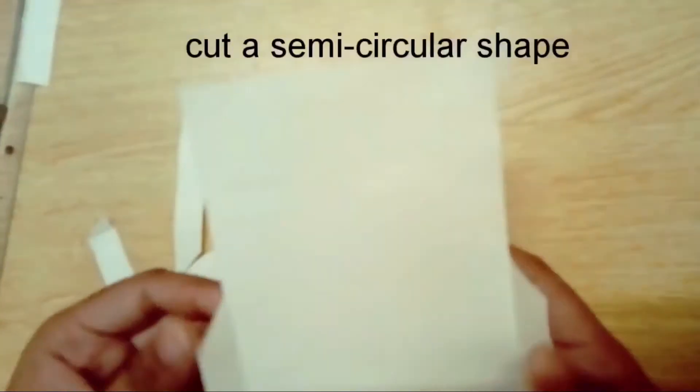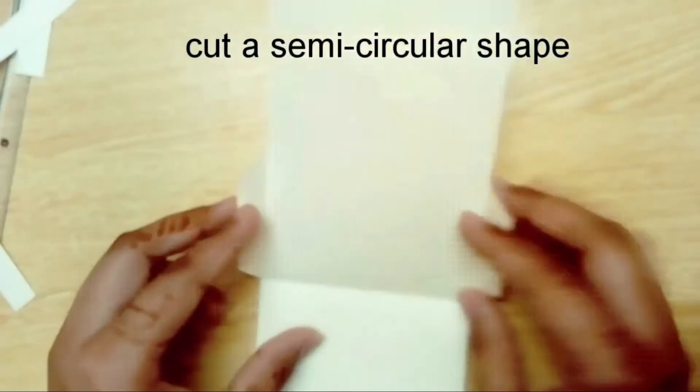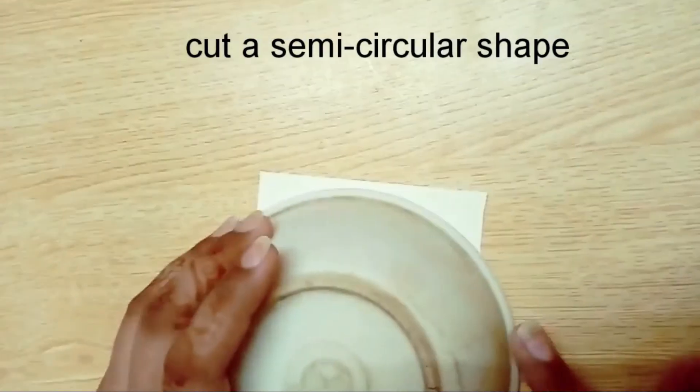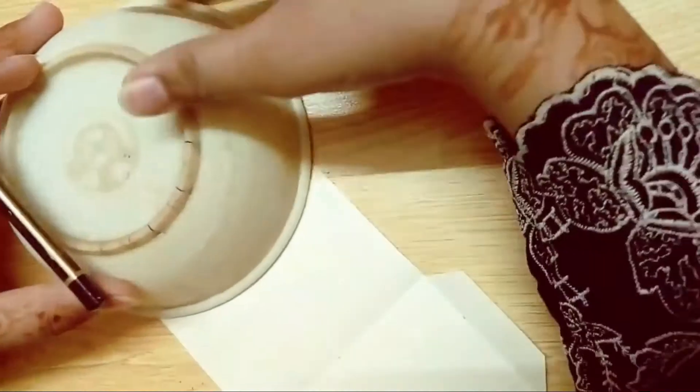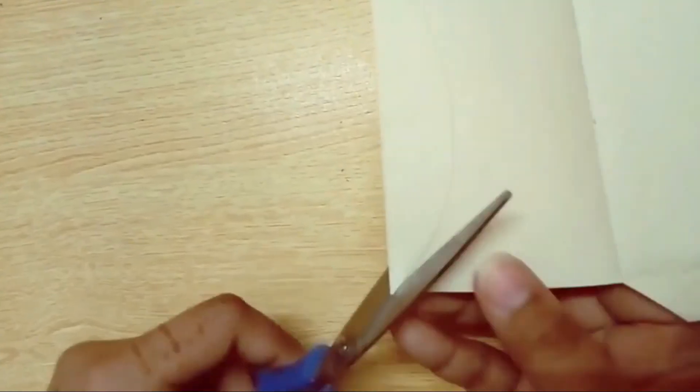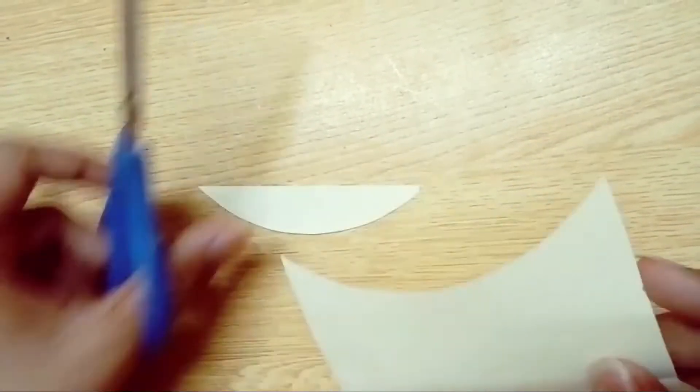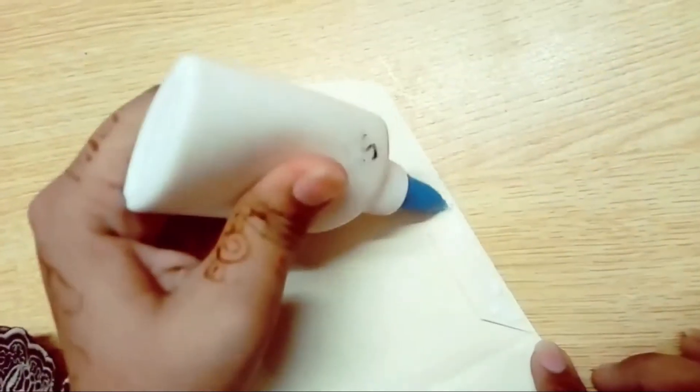The next step is to cut the paper in a semi-circular shape. For this purpose, you can use a bowl and draw a mark using pencil. You can also use a compass for this step. Now I'm using white glue to stick the paper and to form the envelope.